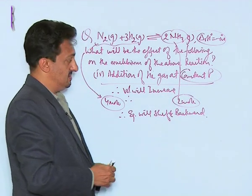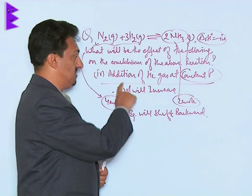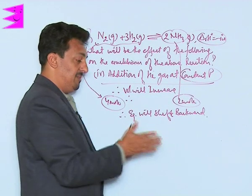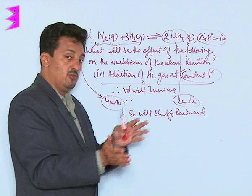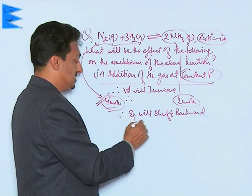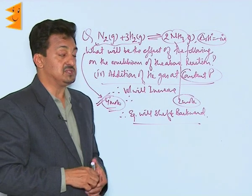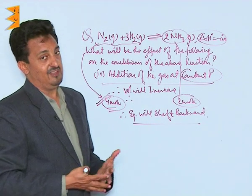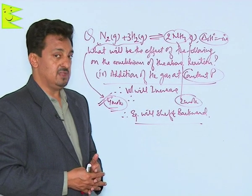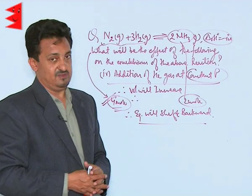The reason is that volume increases when we keep constant pressure and add inert gas, and an increase in volume makes the system move in the direction containing more moles of gas. So the equilibrium shifts in the backward direction. This is how we apply Le Chatelier's principle to solve problems.